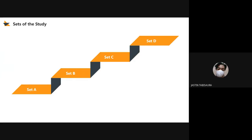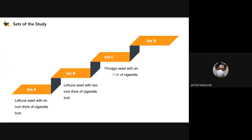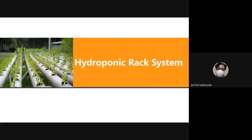The study contains 4 sets: Set A, Set B, Set C, and Set D. Set A contains lettuce seed with 1-inch thick of cigarette butts. Set B contains lettuce seed with 2-inch thick of cigarette butts. Set C contains monggo seed with 1-inch thick of cigarette butts. Set D contains monggo seed with 2-inch thick of cigarette butts. These 4 sets are used to create a hydroponic rock system.